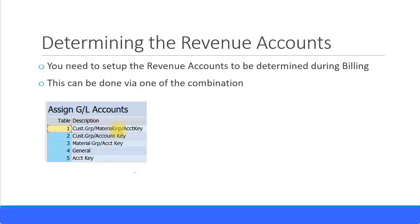In your basic data screen in your material master, what you specify is actually a material account assignment group. In the configuration screen they have not mentioned that explicitly, but when you see material group or customer group listed, it actually means the material account assignment group or customer account assignment group respectively.